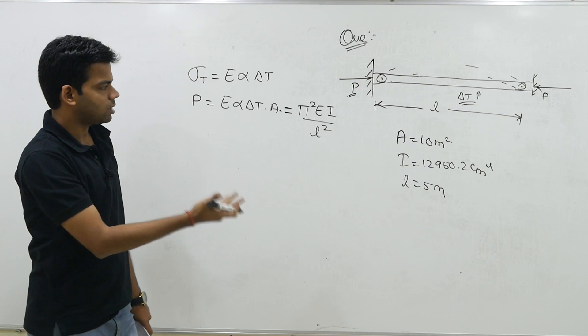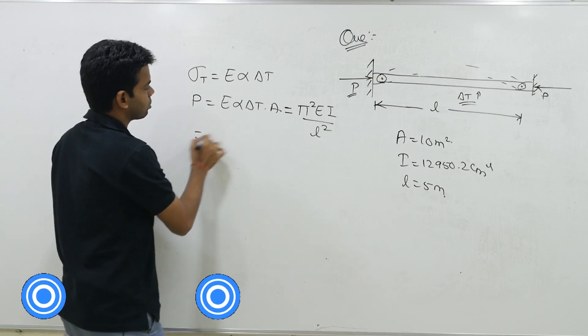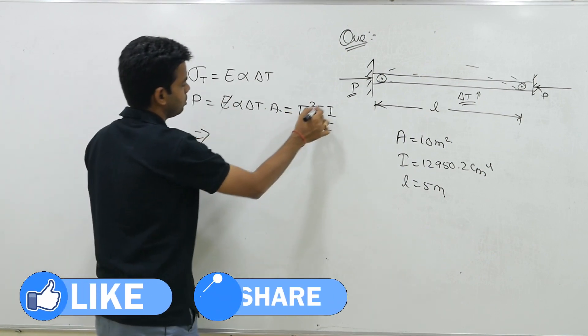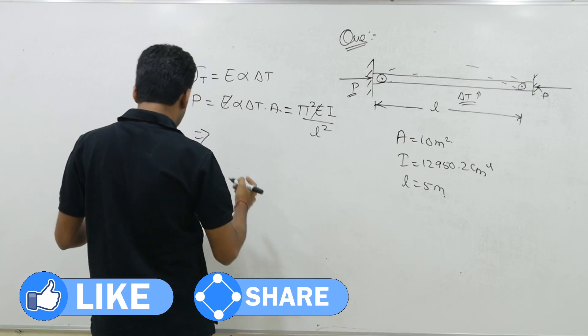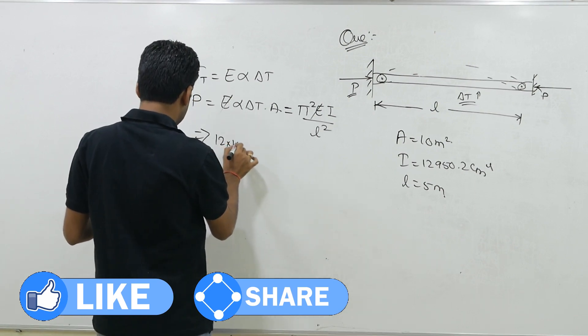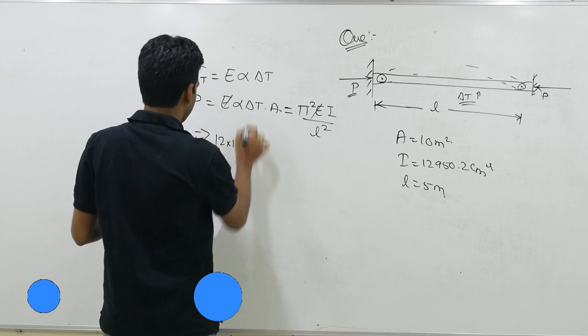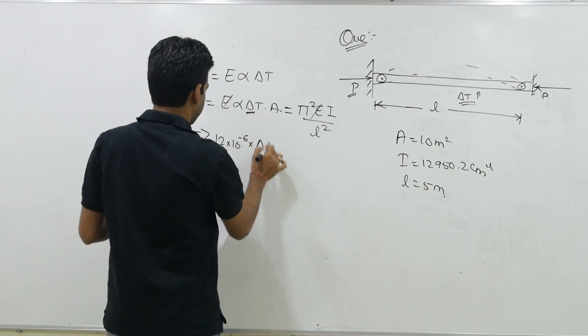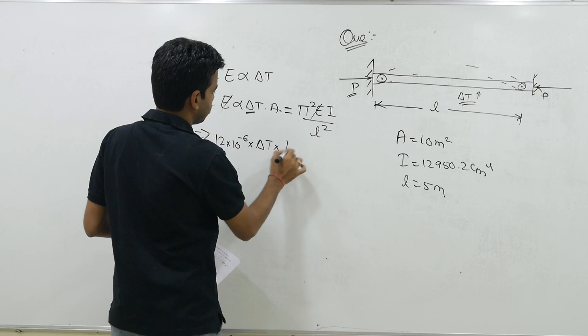That's it. Bas itna sa kaam humko karna hai. You will get the answer. Bas rakh do saare values rakh do. So here E, E will be cancelled out. Alpha ki value given hai question mein, which is 12 into 10 to the power minus 6 into del t which we have to determine. Del t ki value nikalni hai. A ki value bhi di hui hai, which is how much? 10 meter square.